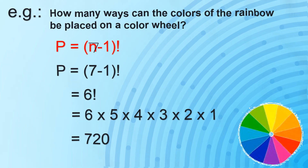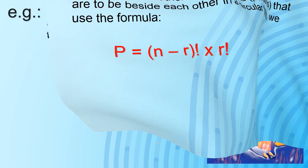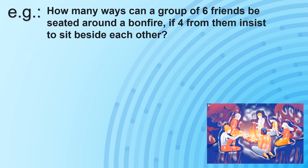Now, in the case that there are elements or persons who want to be seated beside each other in a circular arrangement, we use a different formula: P equals (n minus R) factorial times R factorial. Here N is the number of persons or elements present, while R is the number of those people who want to be seated beside each other.